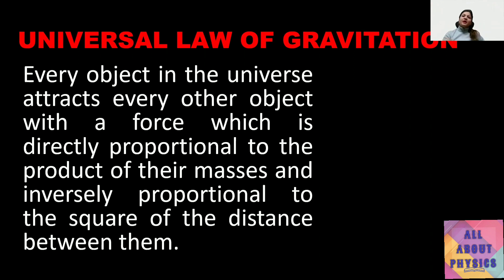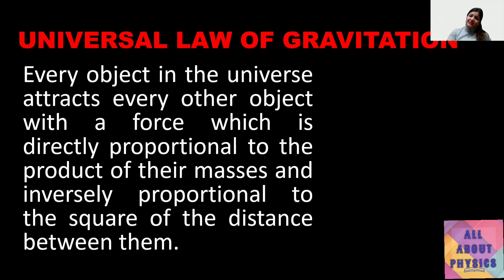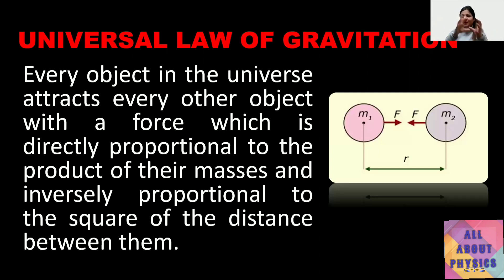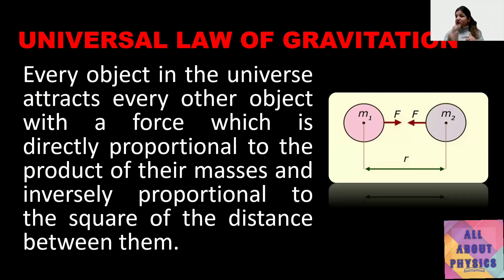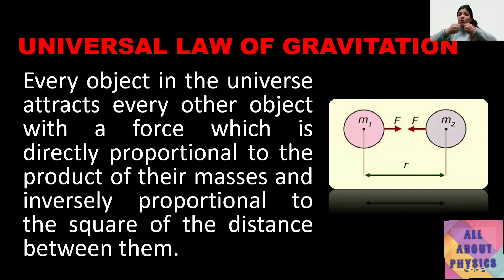The law states that every object in the universe attracts every other object with a force. Gravitational forces are attractive in nature. This force is directly proportional to the product of their masses — when we increase mass, force also increases — and inversely proportional to the square of the distance between them. So if we increase the distance, force decreases; if we decrease the distance, objects attract each other more strongly.